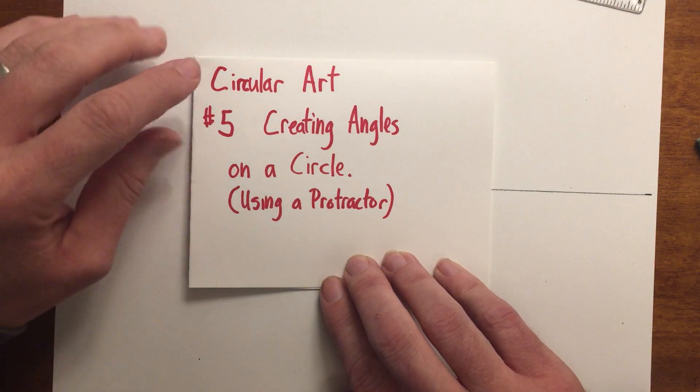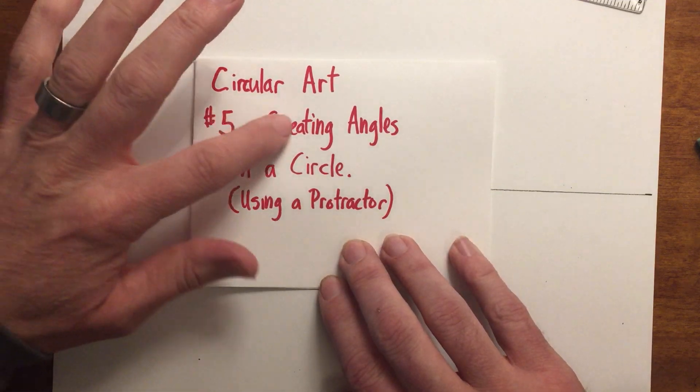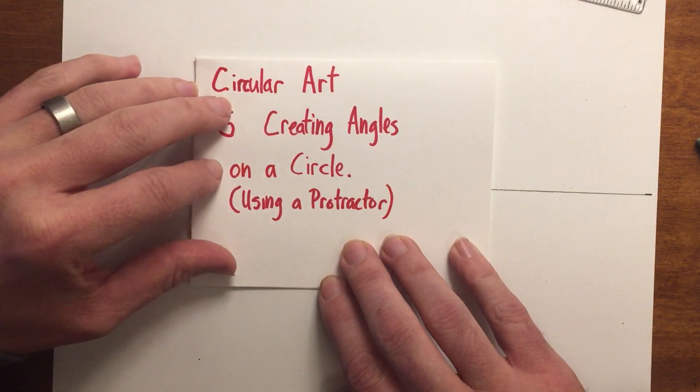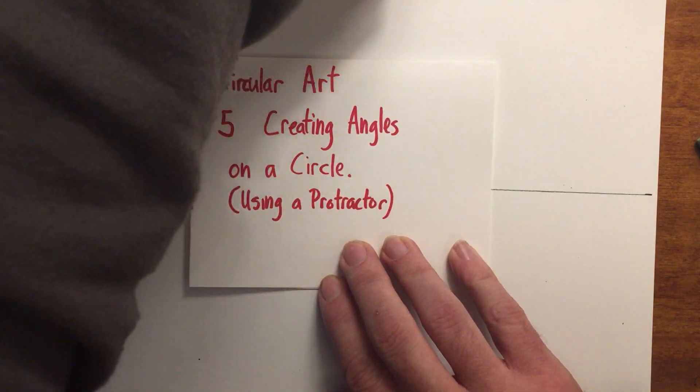Greetings ladies and gentlemen, we're looking at circular art, workshop number five. We're going to start creating angles on a circle and I'm going to start teaching you how to use a protractor.